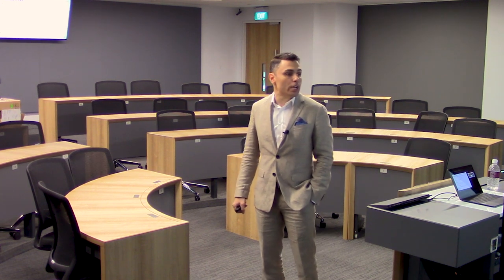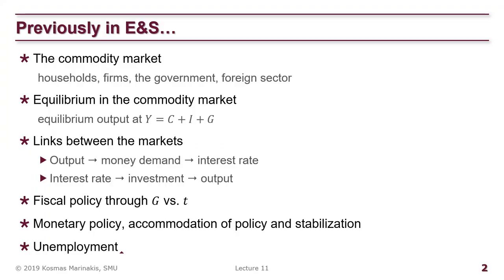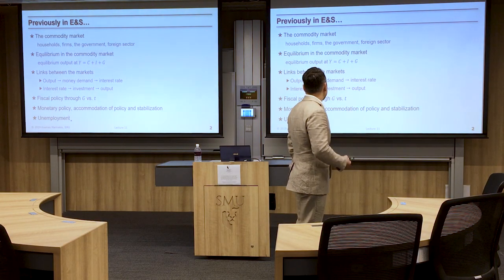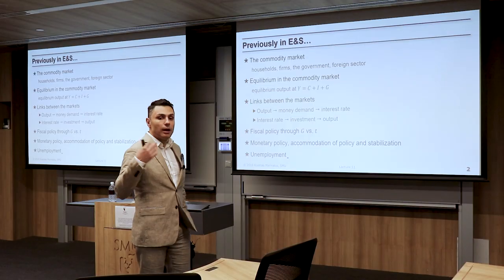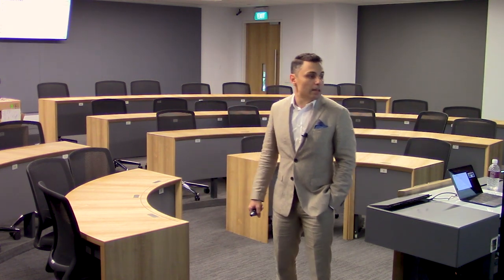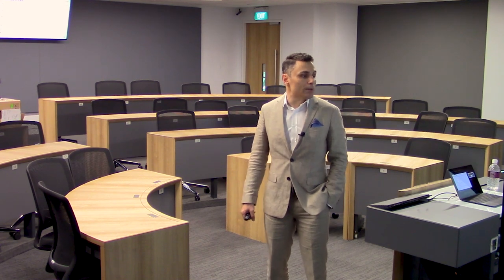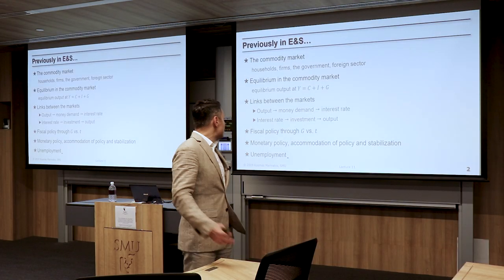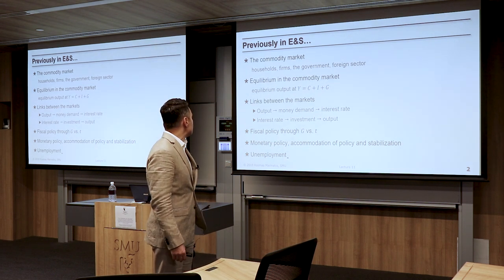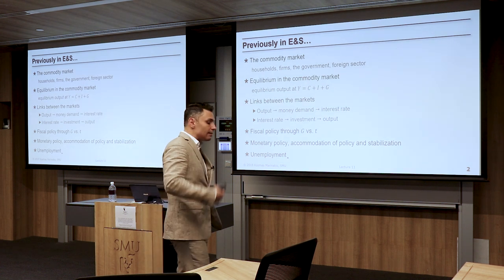The government can use that connection between markets to conduct policy. They can increase G or decrease T — expansionary fiscal policy — or do the reverse: decrease G or increase T, to ease inflation or protect the economy from overheating.